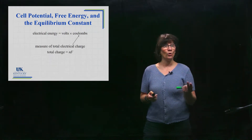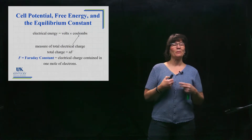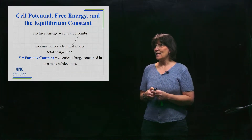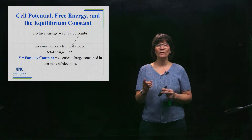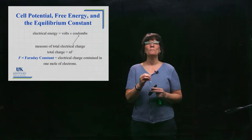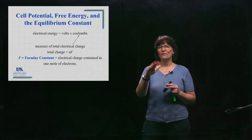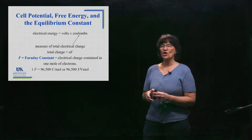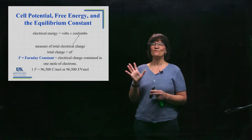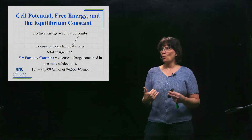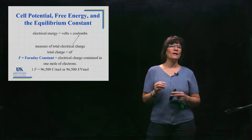Total charge can be determined by n — the number of moles of electrons flowing — times F, which is Faraday's constant. Faraday's constant is how much charge is carried by one mole of electrons. The charge of one electron is tiny, but one mole of electrons carries a charge of 96,500 coulombs. So one Faraday is 96,500 coulombs per mole.